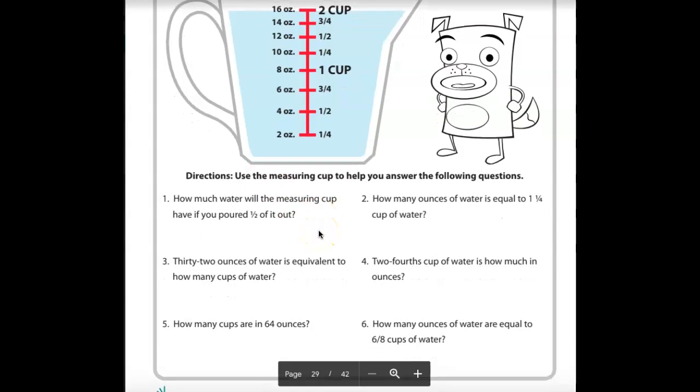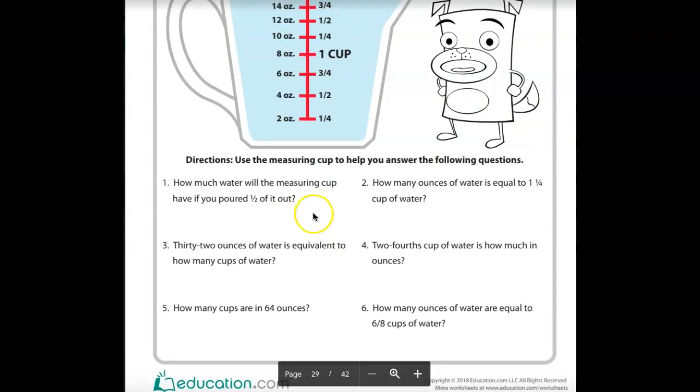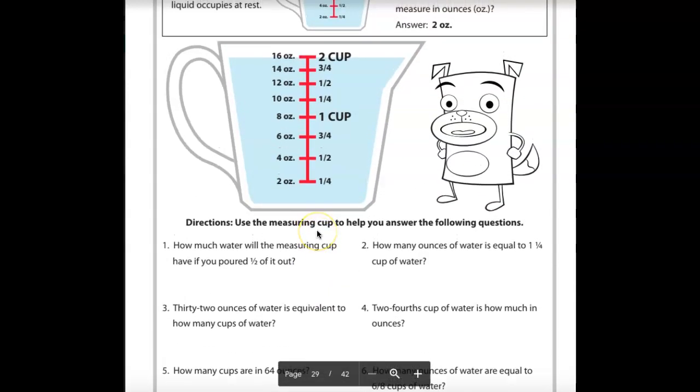Use the measuring cup to help you answer the following questions. All right, how much water will the measuring cup have if you pour half of it out? Okay, so if it holds two cups, what's half of two cups? So think about your division. Two cups, and you're dividing it in half. So when we divide by half, we divide by two. How many twos are in two? One. So halfway is one cup or eight ounces. So all that means is you could write eight ounces, and that would be the answer, or you could write one cup, and that would be the answer. Either one is correct.